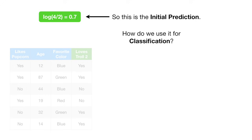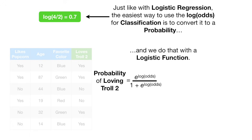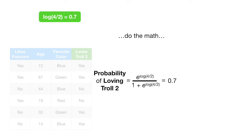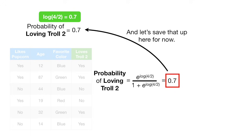How do we use it for classification? Just like with logistic regression, the easiest way to use the log of the odds for classification is to convert it to a probability, and we do that with the logistic function. The probability of loving Troll 2 equals e to the log odds divided by 1 plus e to the log odds. So we plug in the log of the odds into the logistic function, do the math, and we get 0.7 as the probability of loving Troll 2.